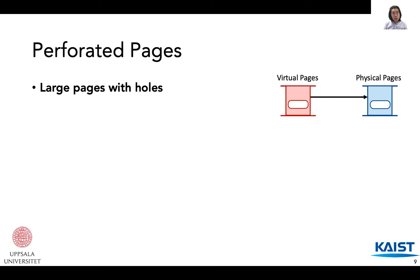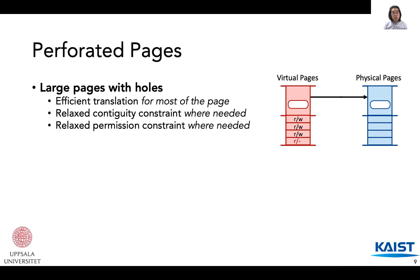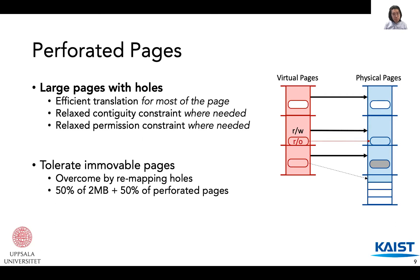Perforated pages provide large page translation, and holes are punched where needed to relax the contiguity constraints. Perforated pages can support large pages with different permissions using hole mappings. Perforated pages can be allocated in the presence of immovable pages — the hole is punched at the location of the immovable page, then mapped to point to another regular page. We found that half of allocations were allocatable as large pages, and the other half — those with immovable pages scattered around — were further allocatable as perforated pages.